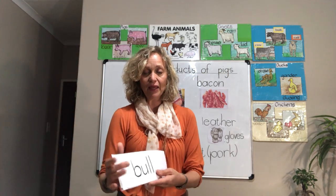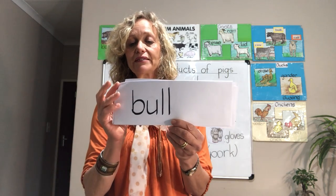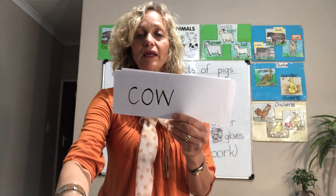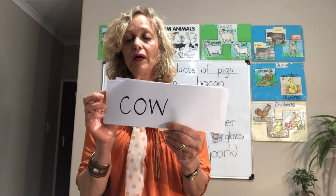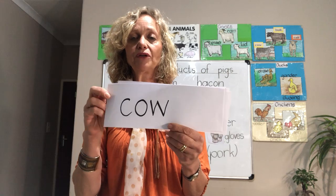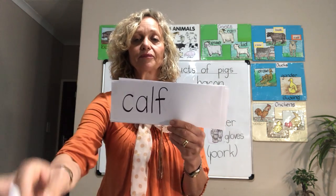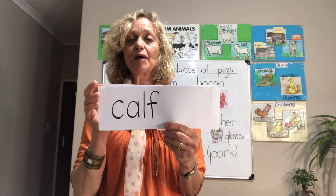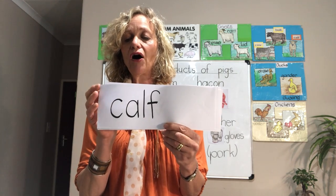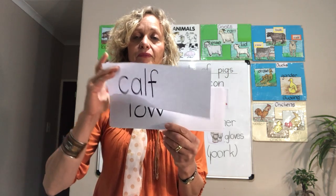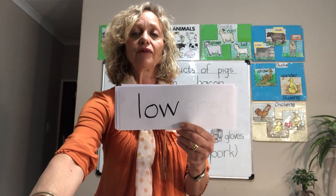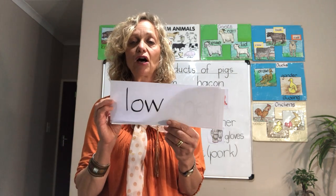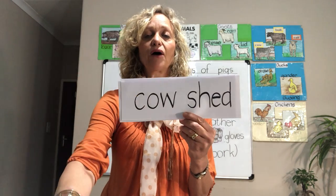Over here you will see the bull. Bull means the male of the cattle. There's the word cow — cow is the word we use for the mummy of the cattle. Calf is the word we use for the baby of the cattle. And the sound a cow makes is low — a cow lows.